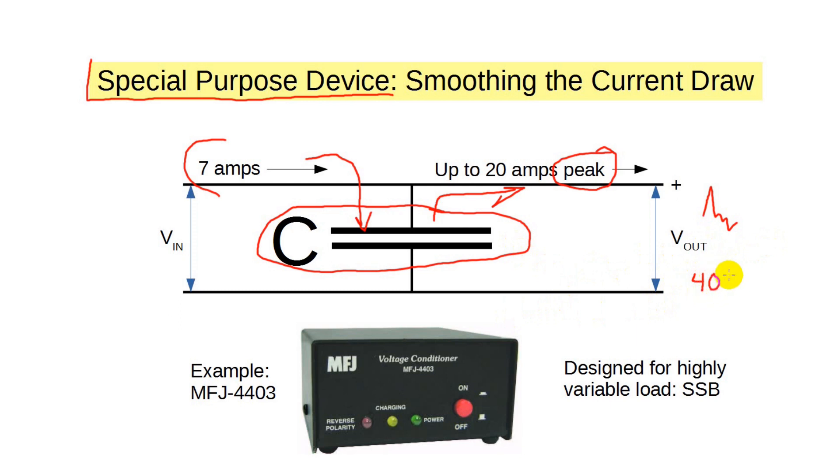The normal duty cycle for single sideband is on the order of 40% when transmitting voice. So, although the peak is 20 amps, the average is more like 8 amps. The idea was originally to use smaller supplies or the lower amperage power socket available in vehicles.